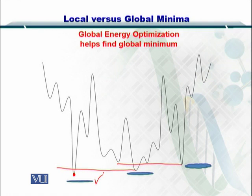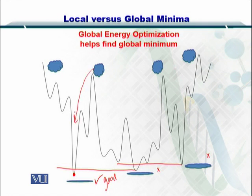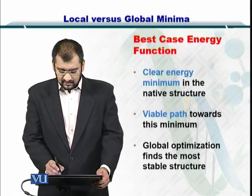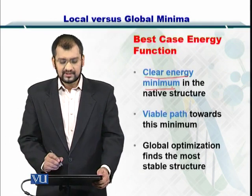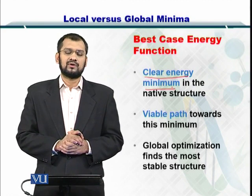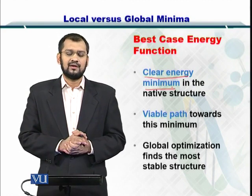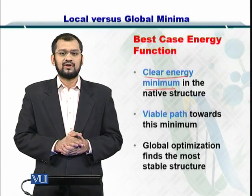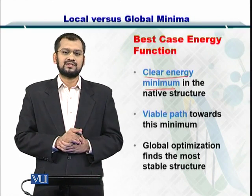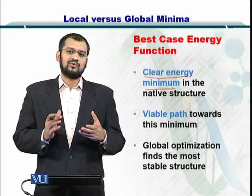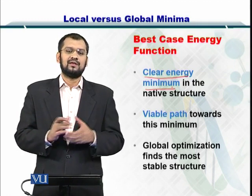You need to perform global energy optimizations — knowing which positions have lower energy and which structure the protein can take. You can see that some protein structures have a higher energy compared to others, making one prediction better than the others. The best case would be a clear energy function that minimizes the energy of the structure in one step. But there can be situations where you have an uneven energy function, creating problems because you are not sure which minima is the global minima.